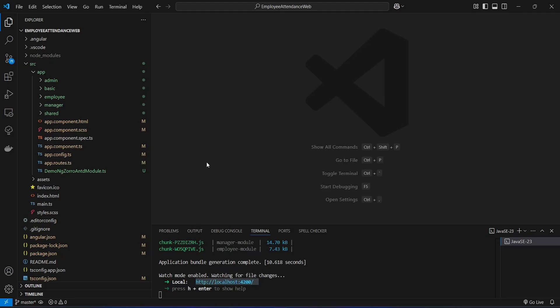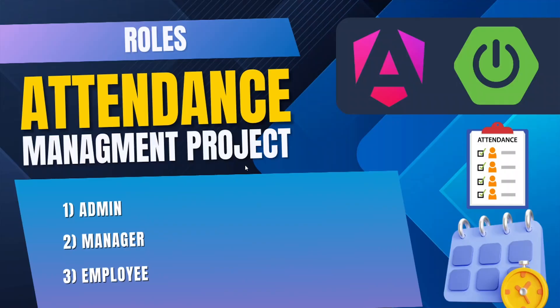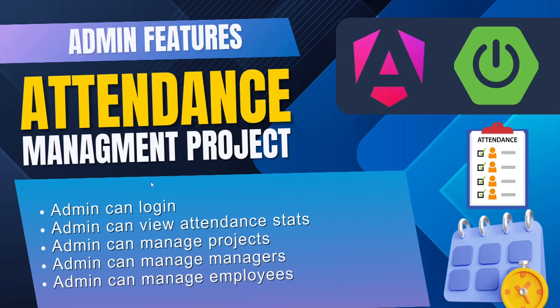Now let's talk about the project overview. In this project we will have three roles which includes admin role, manager, and employee role. Let's talk about the features of admin. In our application we will create the admin account automatically. Admin can use email and password to login. On the admin dashboard, admin can view the attendance stats. Admin can also manage projects, which includes creating new projects and viewing existing projects.